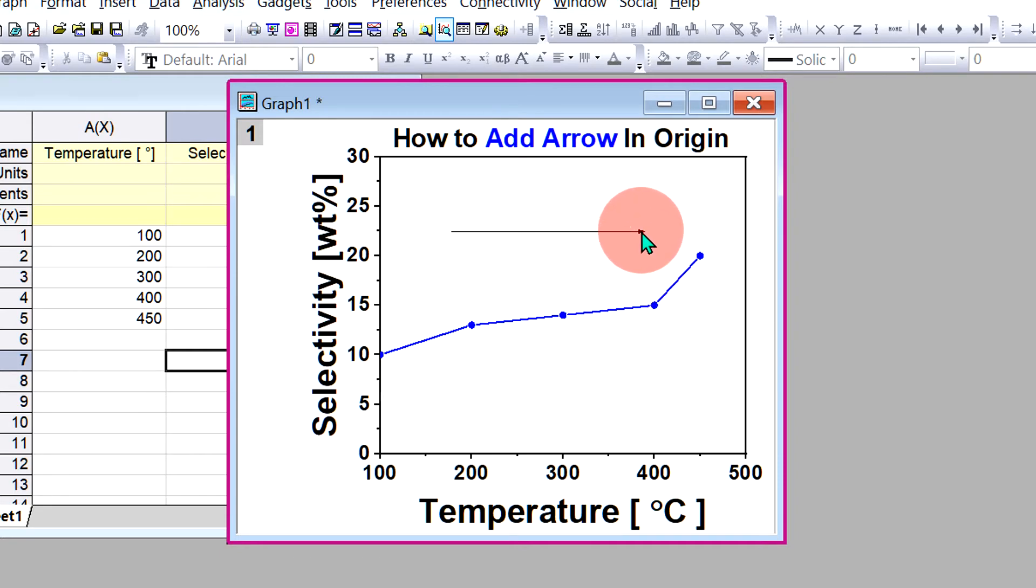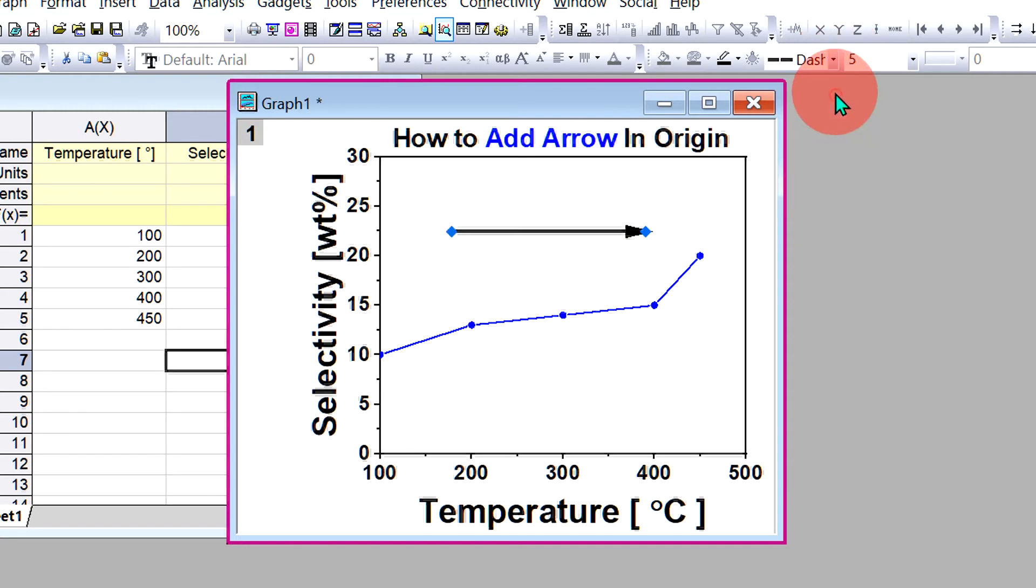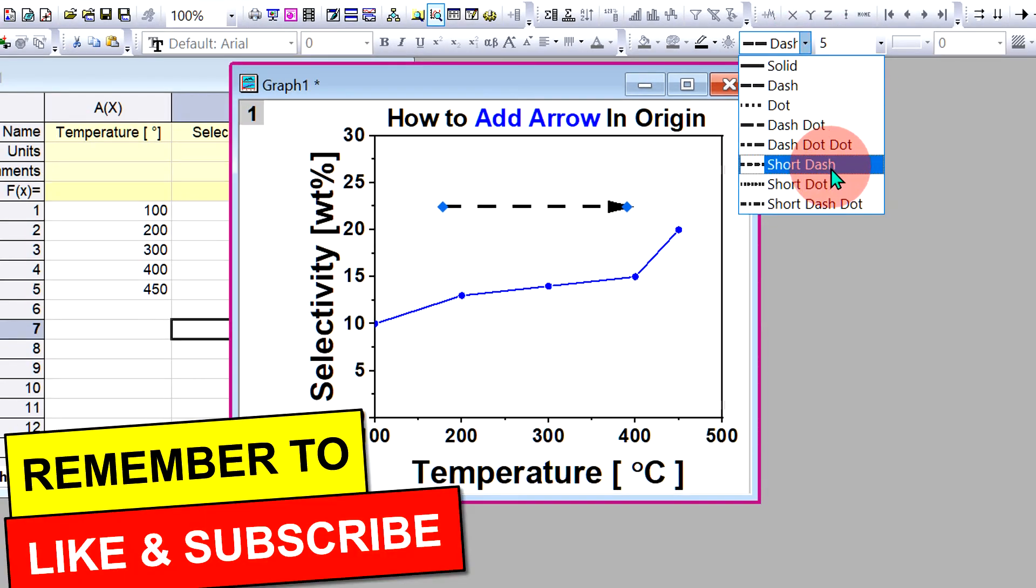Now you can customize this arrow by selecting the arrow and changing its thickness to 5 points for example here and also if you want a dashed line arrow you can also select it from here.